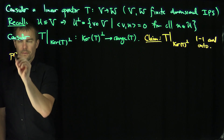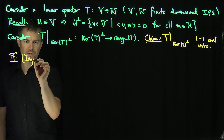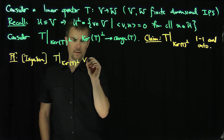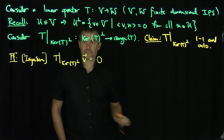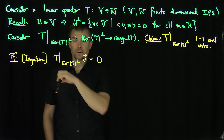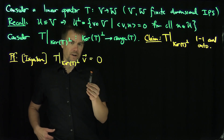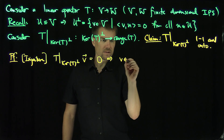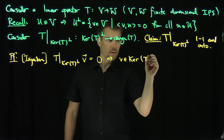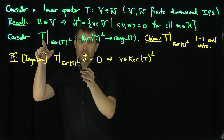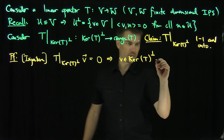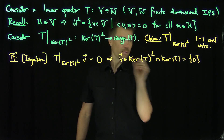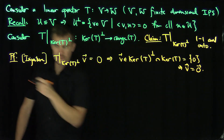Let's prove injectivity first. Suppose that T restricted to the kernel of T perp, applied to a vector V, gives zero. I would like to prove that V is equal to zero. This tells me that V is in the kernel of T perpendicular, and it's also in the kernel of T, because T of V is zero. The intersection of those two subspaces is just the zero vector, so V equals zero. Hence the map is injective.